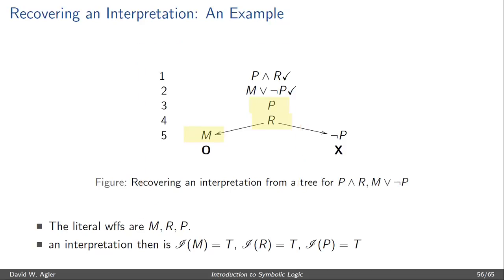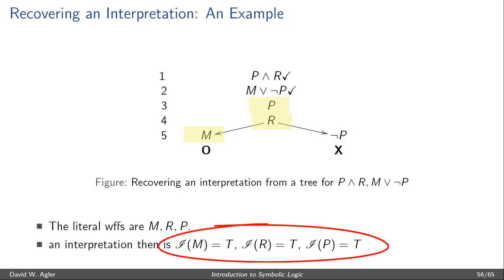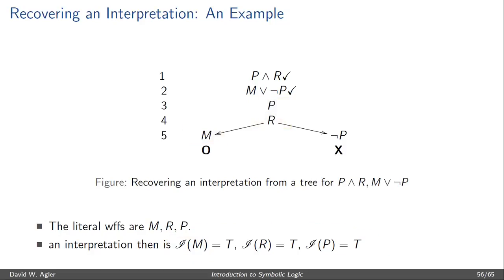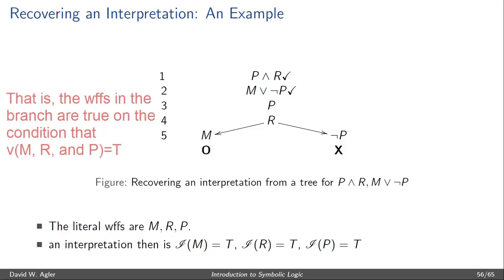We can assign these formulas truth values — that is, we can assign them an interpretation — by assigning true to the propositional letters of atomic well-formed formulas, and false to the propositional letters found in negated well-formed formulas. Here we only have atomic well-formed formulas, M, R, and P, and so we can assign M, R, and P a value of true. Once we've assigned M, R, and P a value of true, this interpretation would make not only M, R, and P true, but also lines 1 and 2 true.